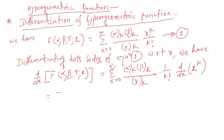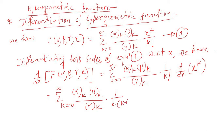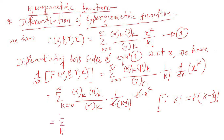This equals summation k equal to 0 to infinity of (α)_k (β)_k over (γ)_k times 1 over k times (k minus 1) factorial. Since k factorial equals k times (k minus 1) factorial, this becomes summation k equal to 0 to infinity of (α)_k (β)_k over (γ)_k times x to the power (k minus 1) over (k minus 1) factorial.